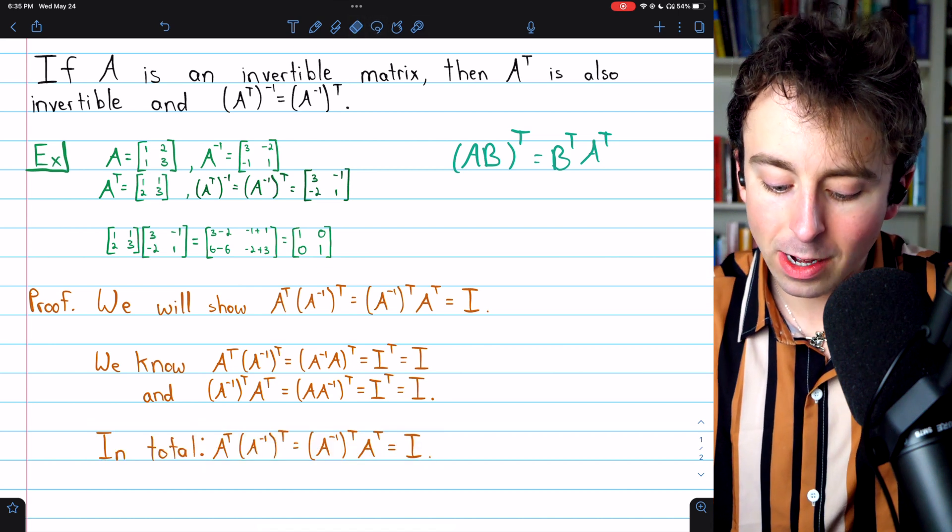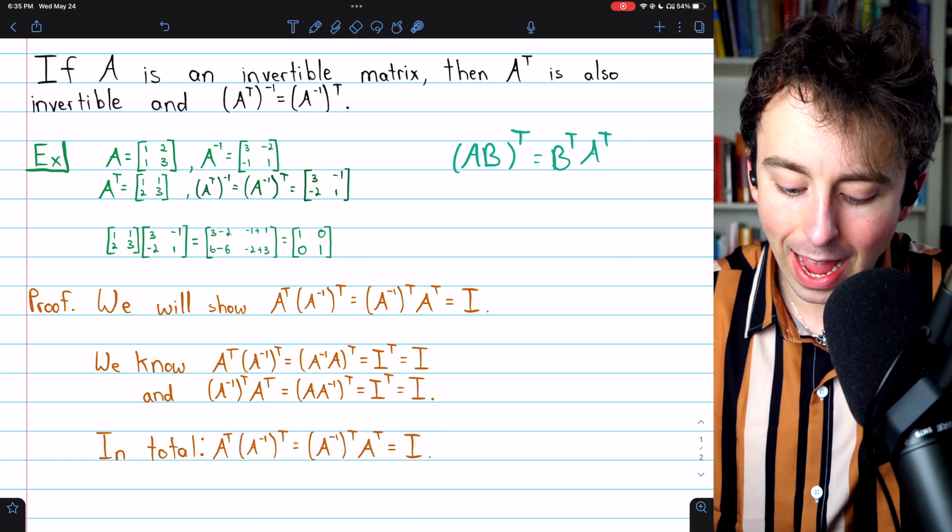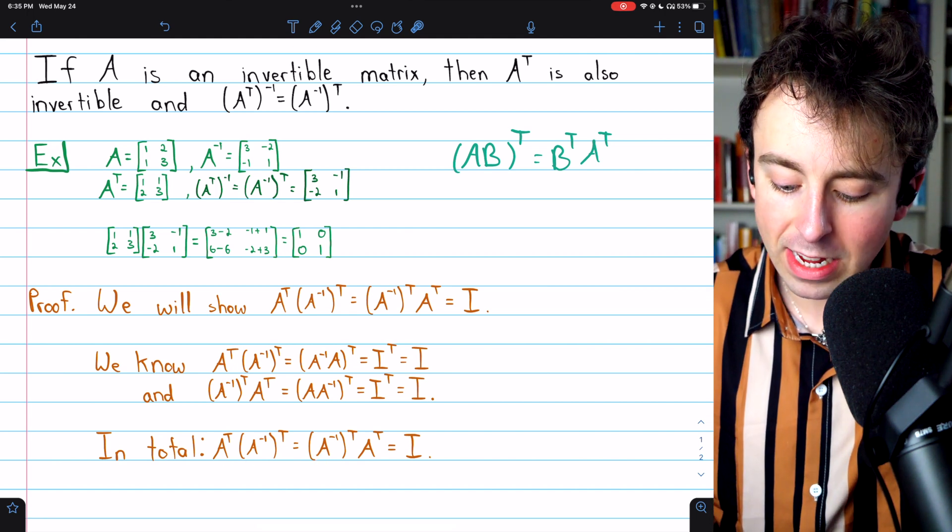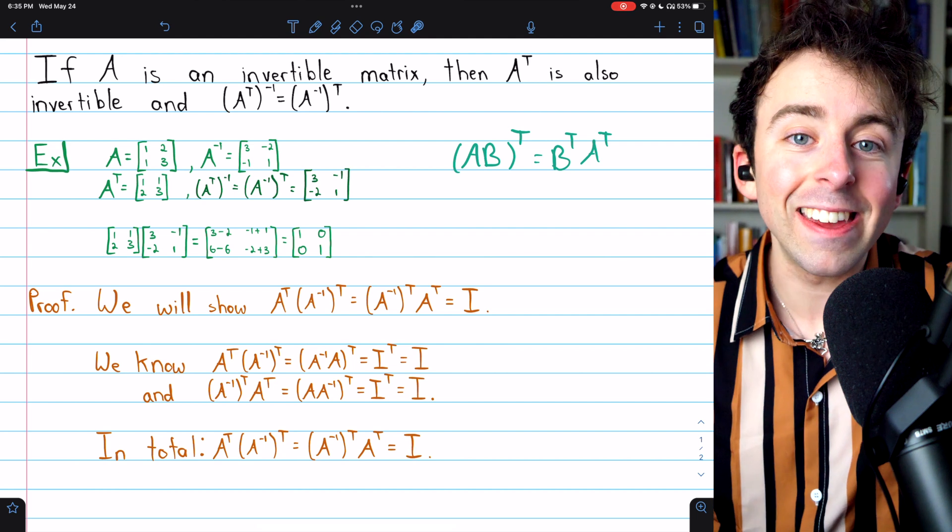So if you take A transpose and multiply it by A inverse transpose, doesn't matter what order you multiply them in, they are equal and they're both equal to the identity.